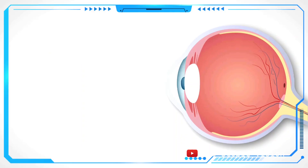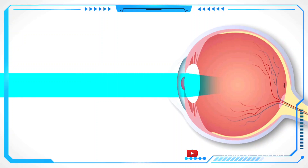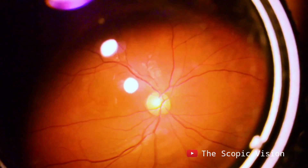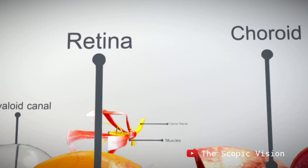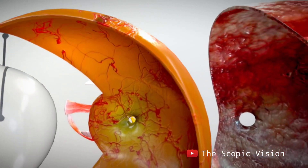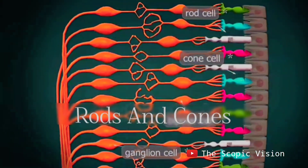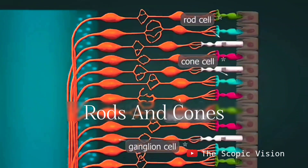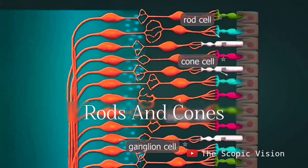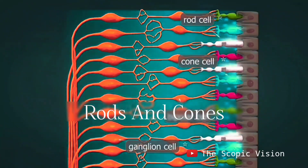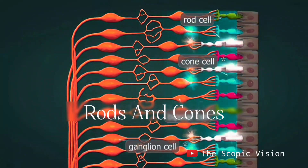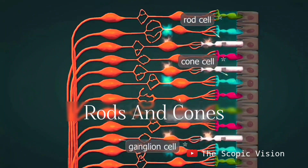The lens refracts light, focusing it on the retina. The innermost layer is made up of nervous tissue, containing the retina. The retina is a delicate structure with photoreceptor cells called rods and cones. These cells convert light into nerve impulses, which are transmitted to the brain.